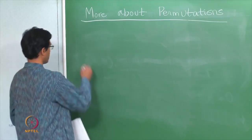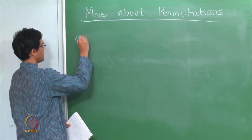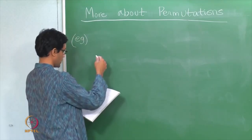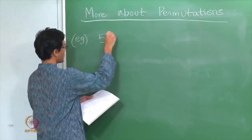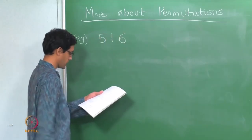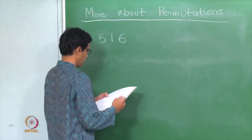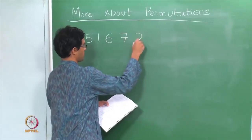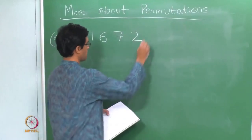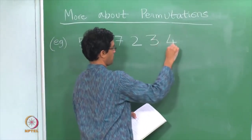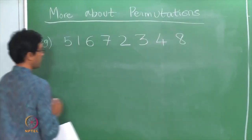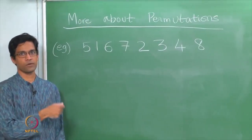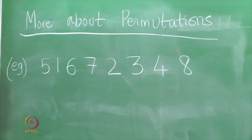Recall what is an example of a permutation. A typical permutation is just a rearrangement of the numbers. For example, let me write down 5, 1, 6, 7, 2, 3, 4, 8. Here is an example of a permutation of the numbers 1 through 8.